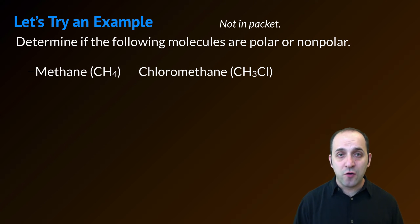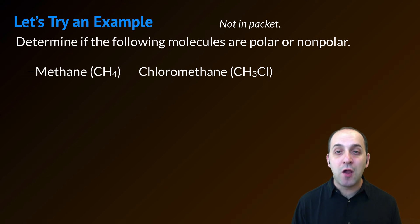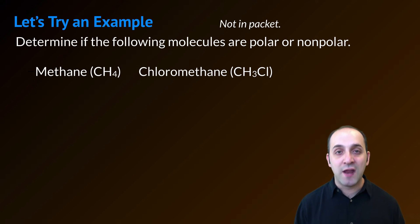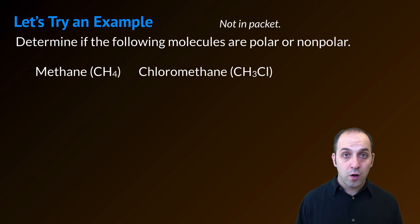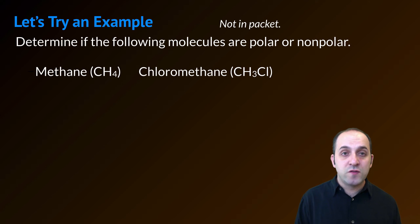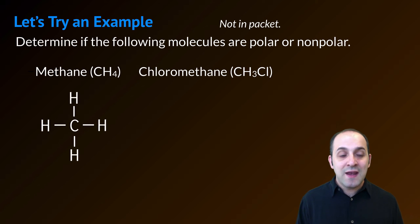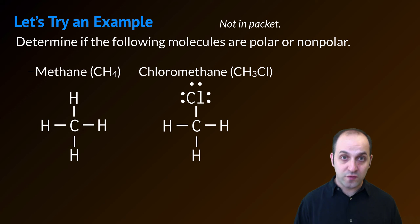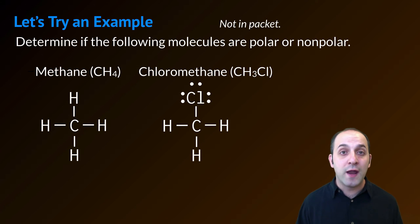Let's do an example together to see if we can figure out the difference between polar and nonpolar molecules. Determine if the following molecules are polar or nonpolar: methane with the formula CH4 and chloromethane with the formula CH3Cl. Methane has a structure we've seen before. Chloromethane has a very similar structure except one of the hydrogens has been substituted for a chlorine atom.